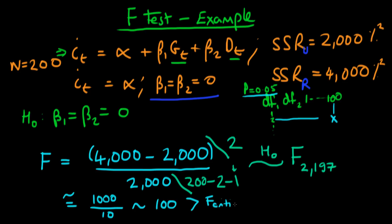If our calculated F-value exceeds the critical value from the table, we reject the null hypothesis. Typically the F-statistic critical value is around three to five. With an F-value of roughly 100, we almost certainly reject the null hypothesis. This makes sense intuitively — by adding the extra variables to our model, we improved its predictability by a factor of two, which with 200 observations strongly suggests the additional independent variables are statistically significant.